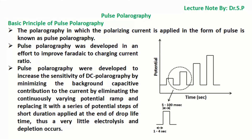This is achieved by eliminating the continuously varying potential ramp and replacing it with a series of potential steps of short duration applied at the end of drop lifetime, thus very little electrolysis and depletion occurs. A simple illustration is shown in the figure, where we can see different pulses in accordance to the applied polarizing current. Pulse polarography consists of application of a series of potential pulses of increasing or constant amplitude, for which the current response is measured near the end of each pulse on a fully grown mercury drop.